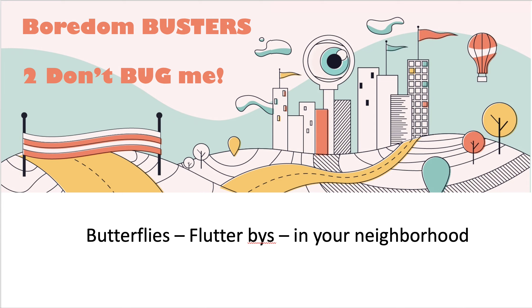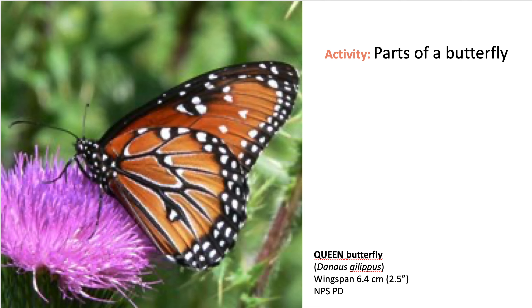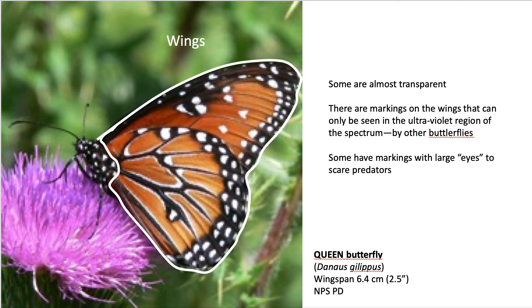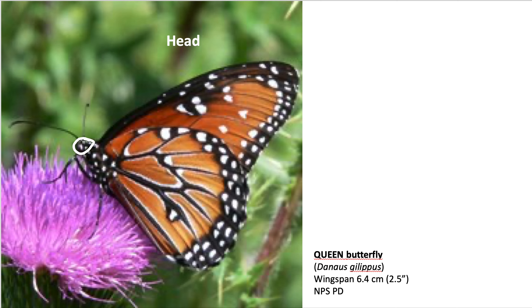Boredom Busters number two — this time we're going to look at butterflies. To begin with, we're going to look at parts of a butterfly. This happens to be a queen butterfly, and you're going to look at each of the sections outlined in white here. The wings, the head — fairly small compared to the rest of the butterfly — and the thorax, which on human beings is where our lungs are, but not for a butterfly.